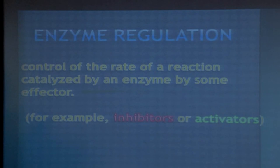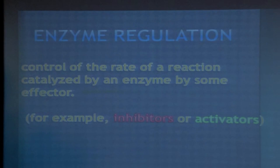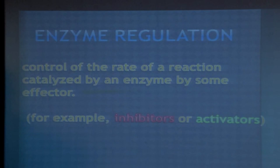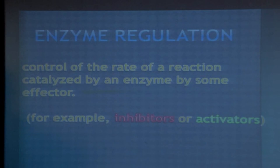Enzyme regulation means some chemical substances present in our body regulate the activity of enzymes. These are generally called modulators. Modulators are classified into either activators or inhibitors. Activators enhance the activity of the enzymes, while inhibitors inhibit the rate of reactions or the activity of the enzymes. For example, ATP inhibits the activity of some enzymes — these are called inhibitors or negative modulators. CTP enhances the activity of enzymes and is called an activator or positive modulator.